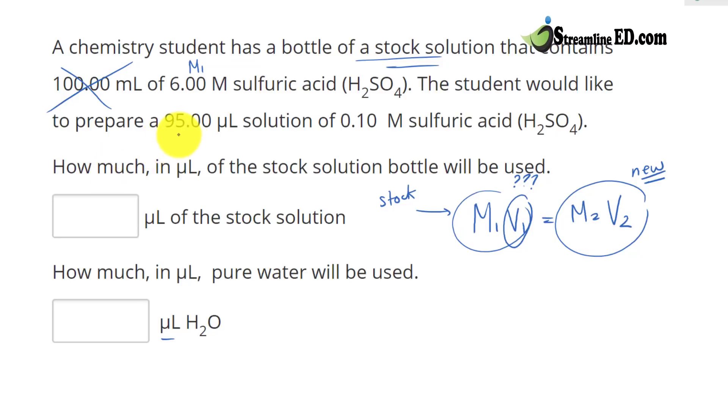The student would like to prepare 95 microliter. So in this case, we are not using milliliter, but we are using microliter. And we want this solution to be at 0.1 molarity sulfuric acid. So again, the same thing.